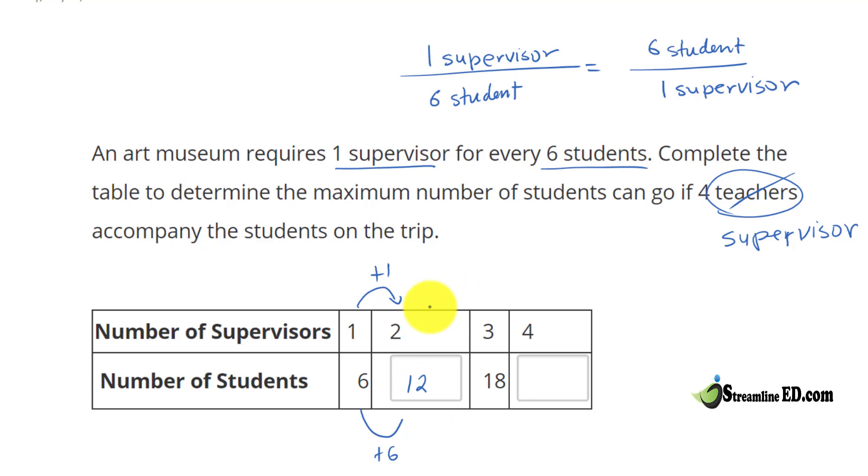Then we have a third one right here, another supervisor. See how the rate stays the same? Every time you add a supervisor you add six students. This is exactly what we just did here. So plus another six. What's twelve plus six? That gives us eighteen.